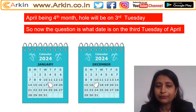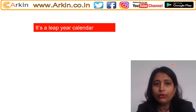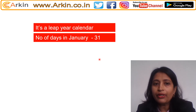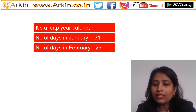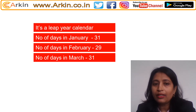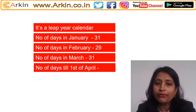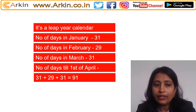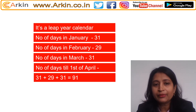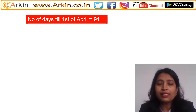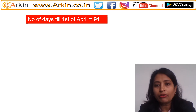It is a leap year calendar, as given. The number of days in January is 31. Since it is a leap year, February has 29 days, and March has 31 days. So the number of days from January 1st up to April 1st is 31 + 29 + 31 = 91 days.